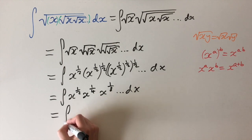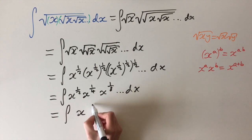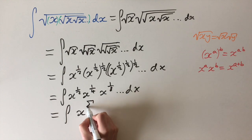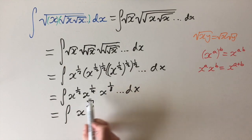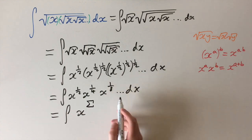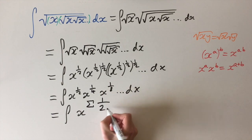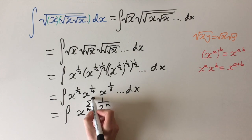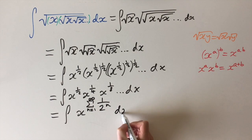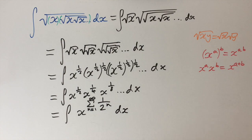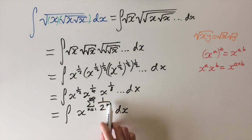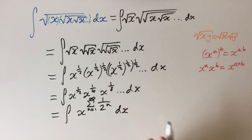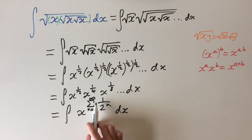Using the second law, since all these terms have the same base we can add the powers together, giving an infinite sum. So this is the integral of x to the power of this series, where the terms are 1/2, 1/4, 1/8 — the pattern is 1 over 2 to the power of n, with n ranging from 1 to infinity. This series is actually a geometric series with common ratio 1/2, which is less than 1, so it converges.